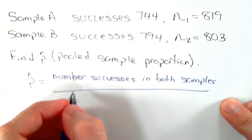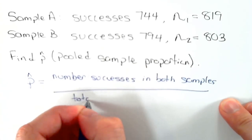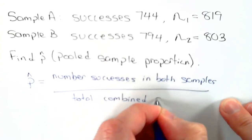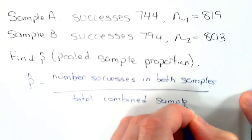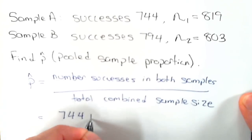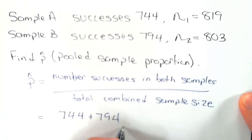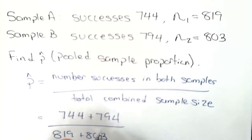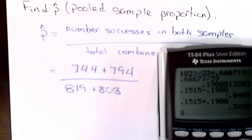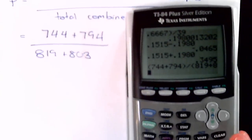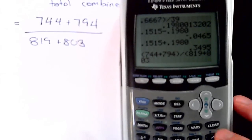Divided by the total combined sample size. So for this situation it's 744 plus 794, the total number of successes, out of 819 plus 803. Typing this in the calculator, we put parentheses around the numerator and denominator.